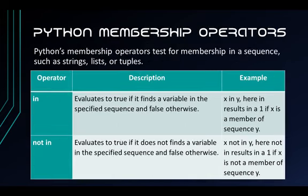Next are the membership operators, which test for membership in a sequence such as strings, lists, or tuples. There are two operators. The in operator evaluates to true if it finds a variable in a specified sequence, and false otherwise. The not in operator evaluates to true if it does not find a variable in the specified sequence, and false otherwise.